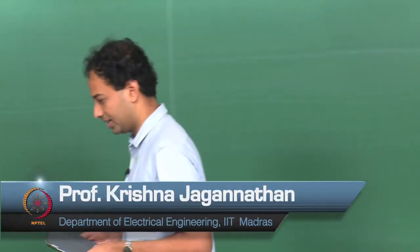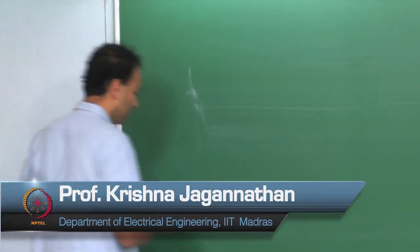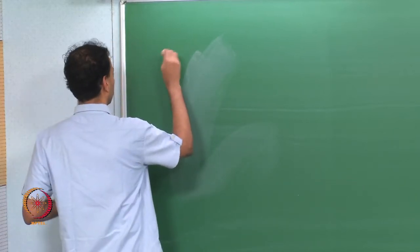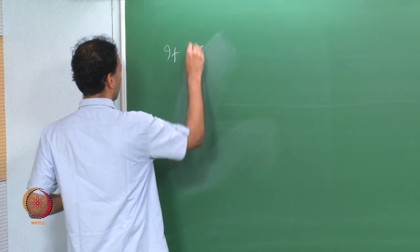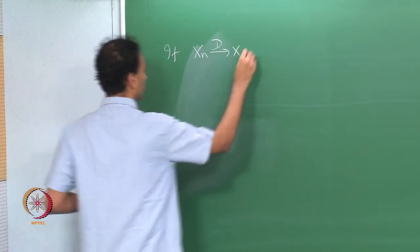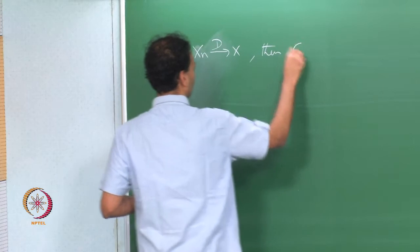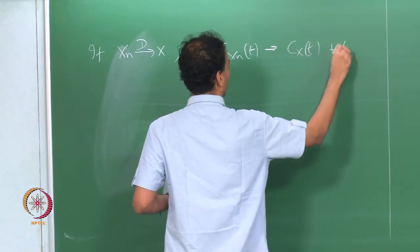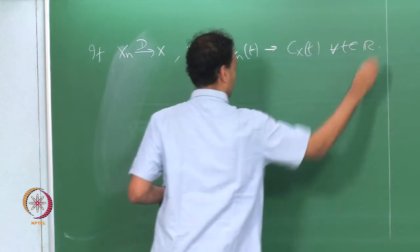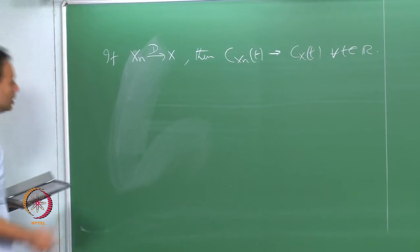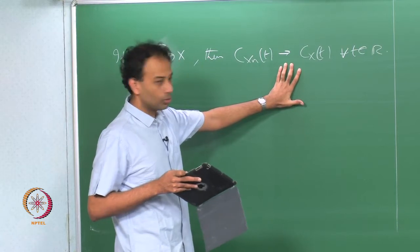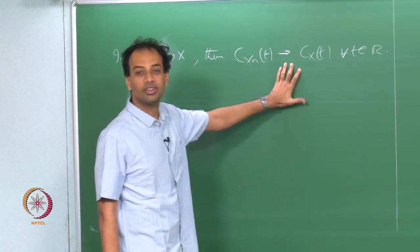We were discussing convergence of characteristic functions. One result we proved yesterday: if x_n converges to x in distribution, then the characteristic function c_{x_n}(t) converges to c_x(t) for all t. Convergence in distribution necessarily implies the convergence of characteristic functions. We proved this using Skorokhod and the dominated convergence theorem.